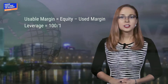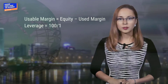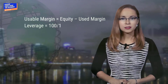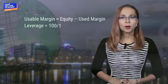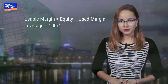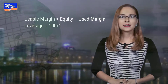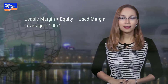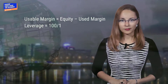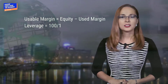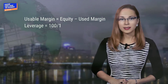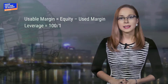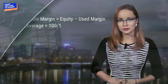The leverage is 100 to 1 because you control $10,000 with just $100. The remaining 99% is provided by the broker. The margin is needed for broker security in case the market goes against your position.